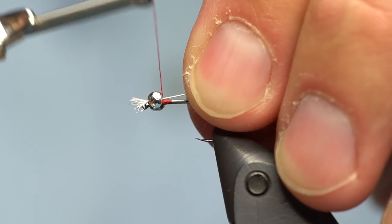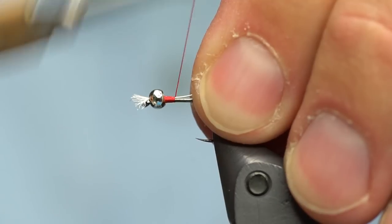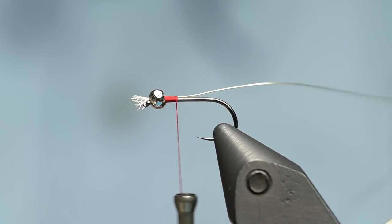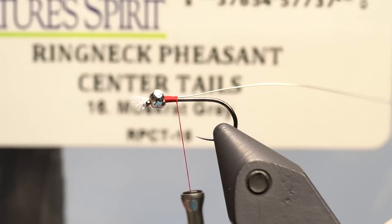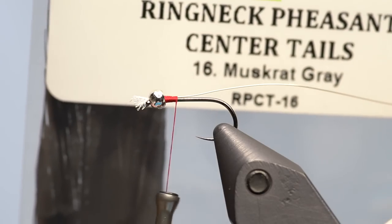I'm just going to first tie it in right here behind the bead. So that I don't make a big lump at the back end, I'm going to tie it full length. Before I get too far, I'm going to save some thread and some thickness and tie in some ring neck center tails in muskrat gray Nature Spirit.